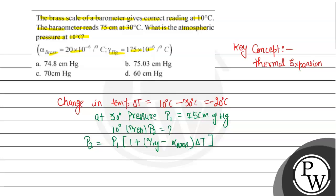If we put in the values, it will be P2 equals P1, which is 75, into 1 plus — for mercury the thermal expansion is 175 into 10 raise to power minus 6, and for brass this value is 20 into 10 raise to power minus 6 — and the change in temperature is minus 20 degree Celsius.